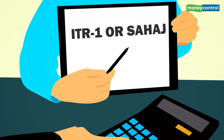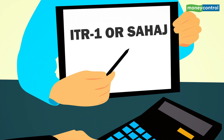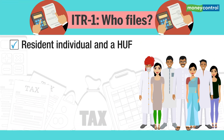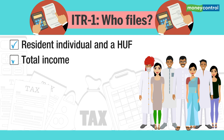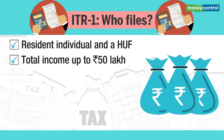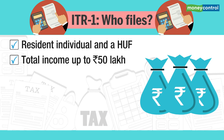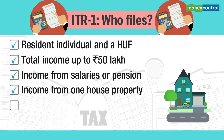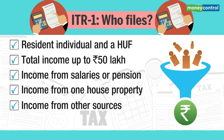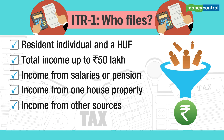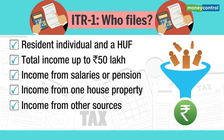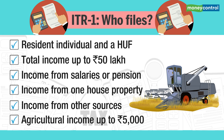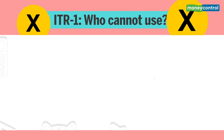ITR-1 or Sahaj is for assessees with salary and other income up to Rs 50 lakh. ITR-1 is for a resident individual assessee and a Hindu undivided family with a total income of up to Rs 50 lakh during the financial year 2019-20. Total income includes income from salaries or pension, income from one house property, income from other sources including interest on bank deposit but excluding income from lottery, racehorses, legal gambling, etc., and agricultural income of up to Rs 5,000.